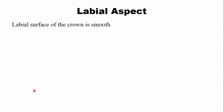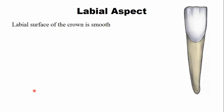From the labial aspect, the surface of the crown is smooth with very few developmental lines, and those developmental lines are not very prominent. As you can see in this diagram, there are very faint developmental lines on the crown surface. They are not prominent, so overall the labial surface of the crown is smooth.